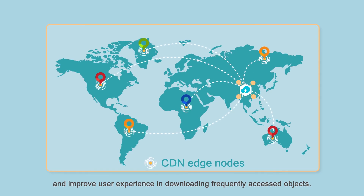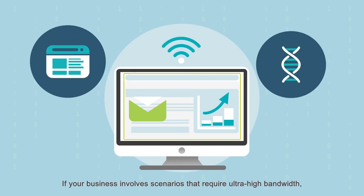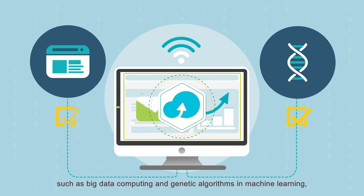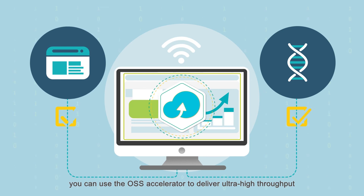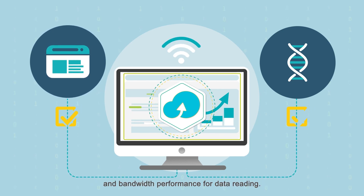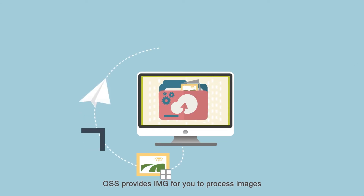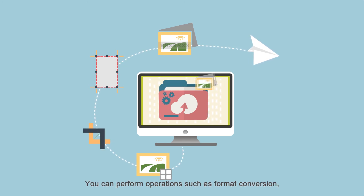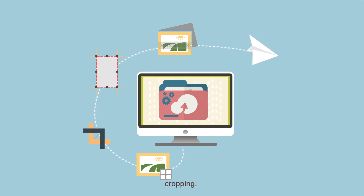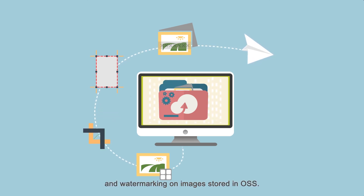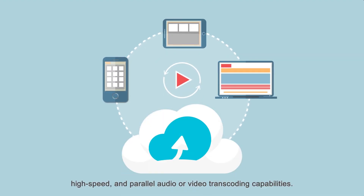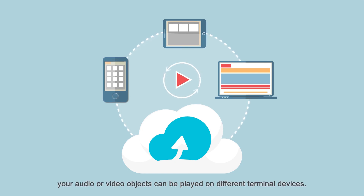If your business involves scenarios that require ultra-high bandwidth, such as big data computing and genetic algorithms in machine learning, you can use the OSS accelerator to deliver ultra-high throughput and bandwidth performance for data reading. OSS provides IMG for you to process images and immediately store the processed images. You can perform operations such as format conversion, cropping, resizing, and watermarking on images stored in OSS. OSS also provides high-quality, high-speed, and parallel audio or video transcoding capabilities, so your audio or video objects can be played on different terminal devices.